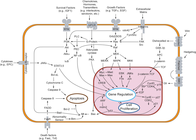Juxtacrine signals target adjacent, touching cells. These signals are transmitted along cell membranes via protein or lipid components integral to the membrane and are capable of affecting either the emitting cell or cells immediately adjacent. Paracrine signals target cells in the vicinity of the emitting cell; neurotransmitters represent an example. Endocrine signals target distant cells; endocrine cells produce hormones that travel through the blood to reach all parts of the body.